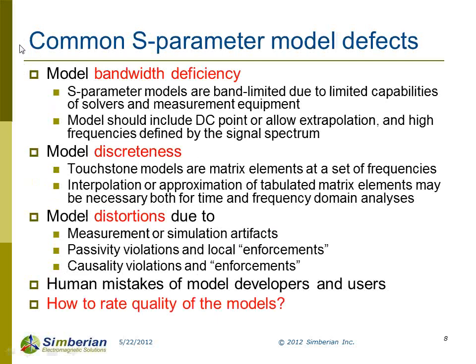Common defects in scattering parameters are bandwidth deficiency, discreteness, and distortion due to various factors. Considering bandwidth deficiency, scattering parameters are band-limited due to limited capabilities of solvers and measurement equipment — this is natural. In interconnect analysis, models should always include the DC point or allow extrapolation, and should extend to high frequencies defined by the signal spectrum.